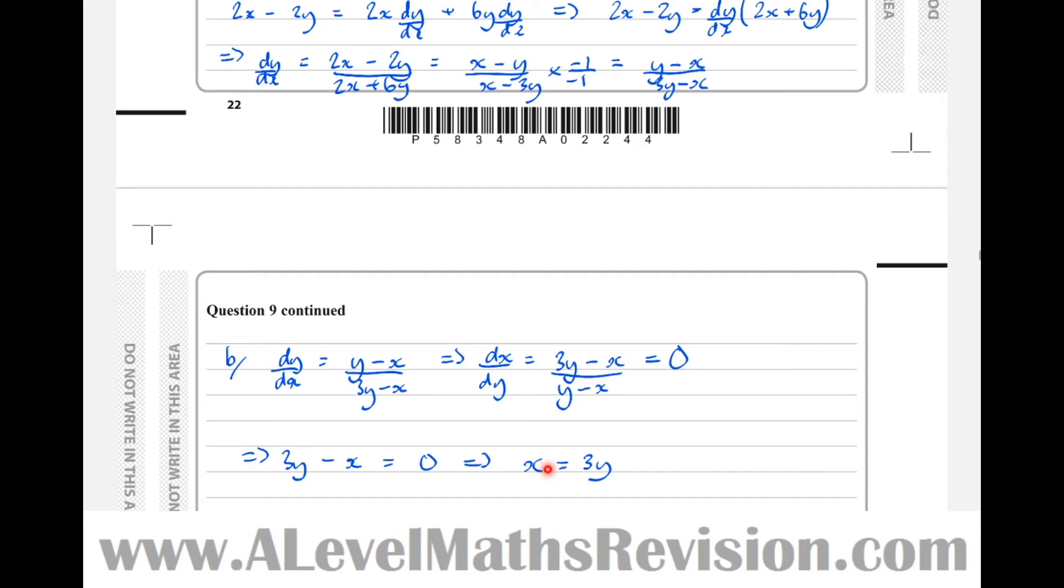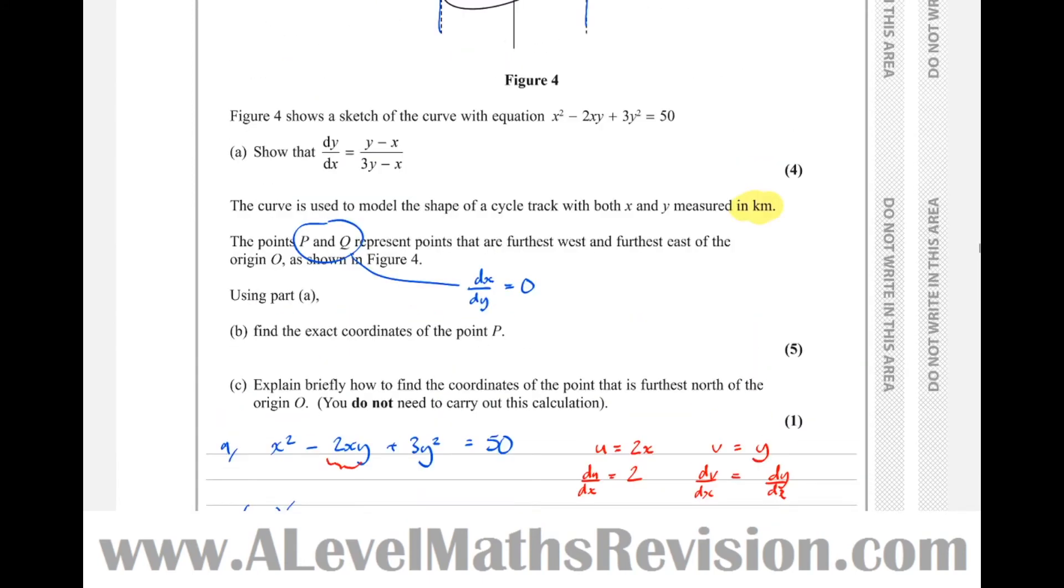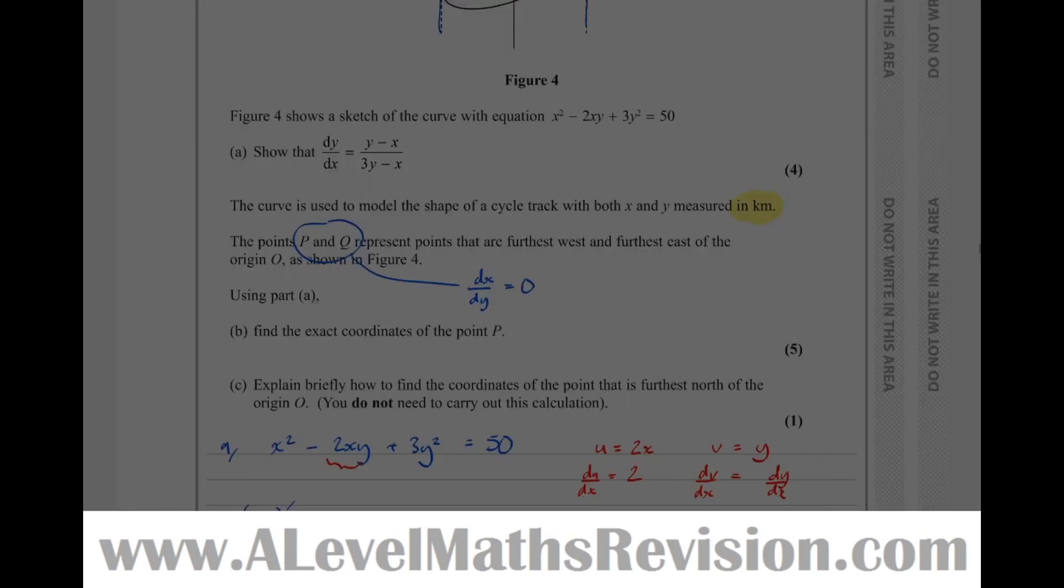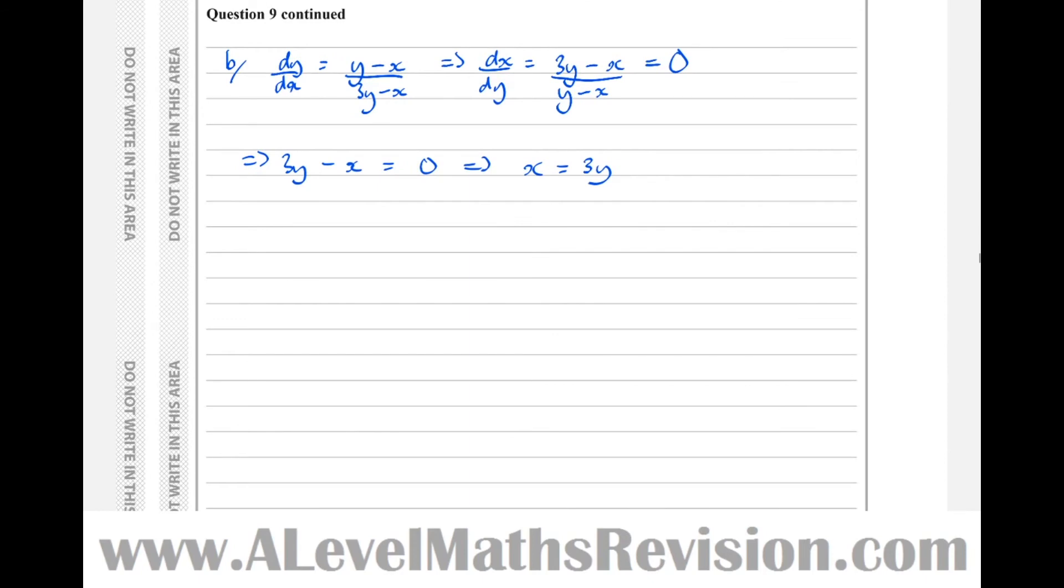We know the points lie on x equals 3y, but they also lie on the curve. Let's take the equation of the curve. We want to make sure the points lie both on that line and on that curve. Substituting in, I get x squared, which is 3y all squared, minus 2x, which is 3y, times y, plus 3y squared equals 50.